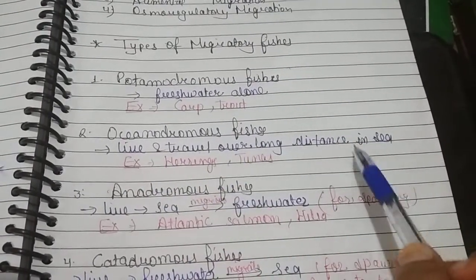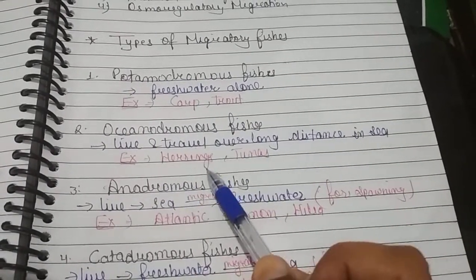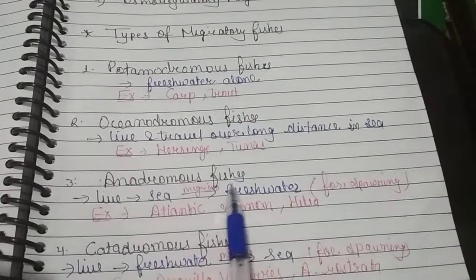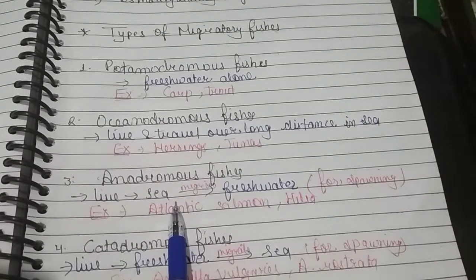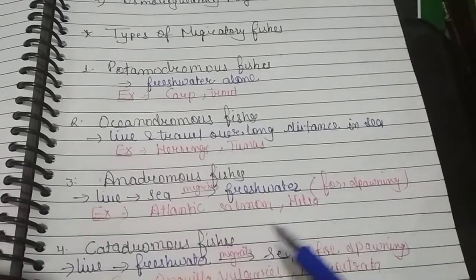live and travel over long distances in the sea, meaning within seawater. Examples: herrings and tunas. Anadromous fishes live in the sea and migrate to freshwater for spawning. Examples: Atlantic salmon and hilsa.